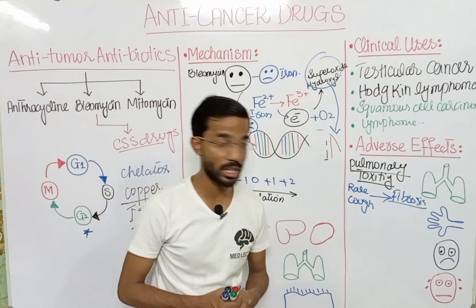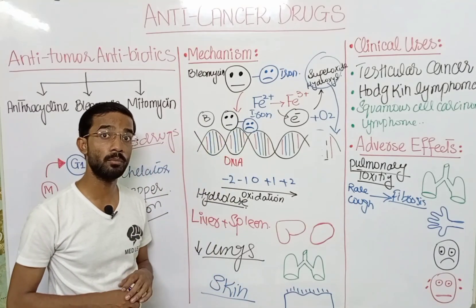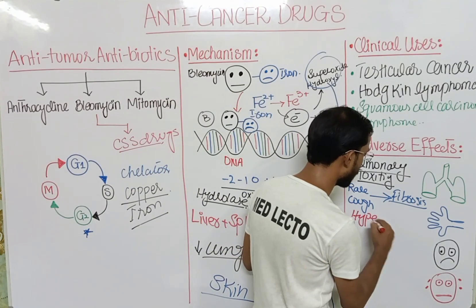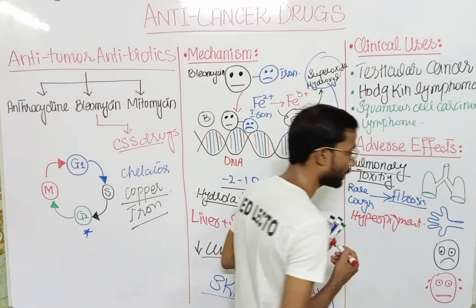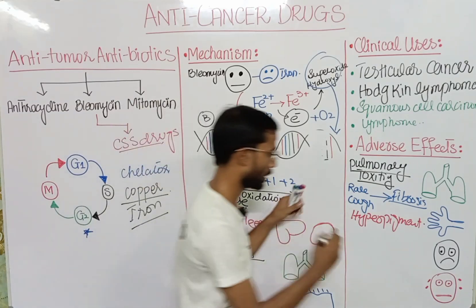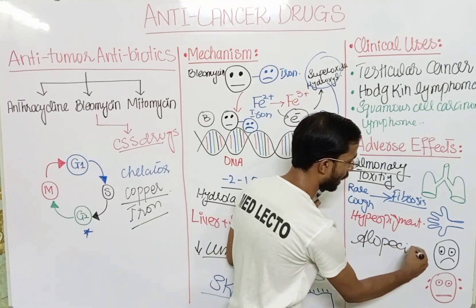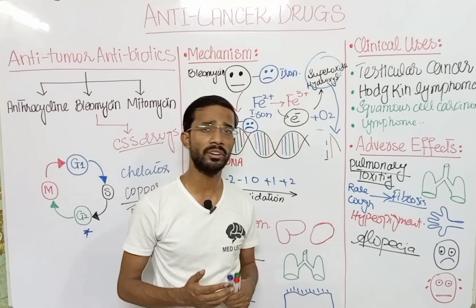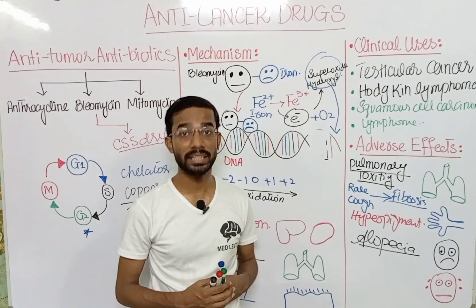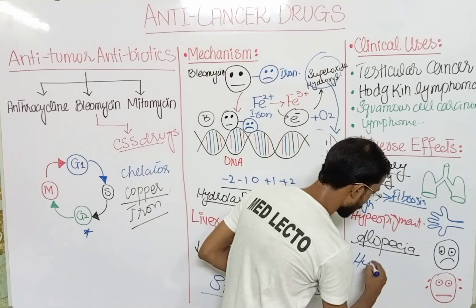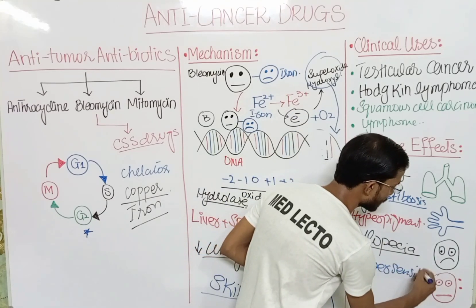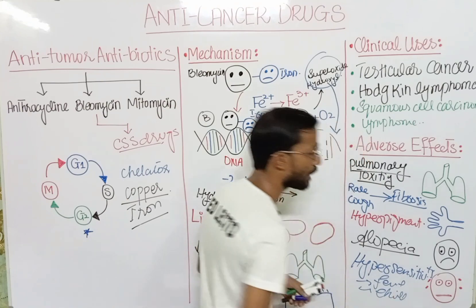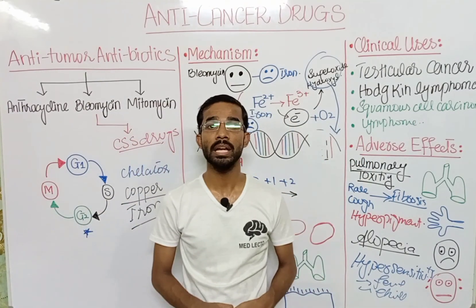Next, you will see hyperpigmentation, because as discussed, bleomycin acts specifically on the skin, causing hyperpigmentation as an adverse effect. Next is alopecia, which is loss of hair — also an adverse effect of bleomycin. Finally, there is hypersensitivity reaction, in which you will see fever, chills, and anaphylactic shock. So this is all about bleomycin.